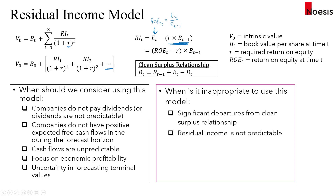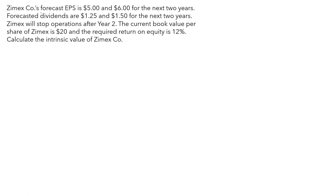Another case where the model is inappropriate is when residual income is not predictable because its determinants, like book value and ROE, are very hard to predict. In this example, ZMAX has forecast earnings per share of $5 for year one and $6 for year two, with forecasted dividends of $1.25 and $1.50 for the next two years. We assume ZMAX will stop operations after year two to simplify the illustration. The current book value per share is $20 and the required return on equity is 12%.